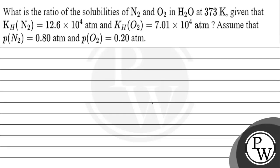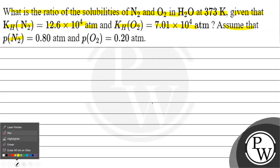Let's read this question. The question says: what is the ratio of solubilities of nitrogen and oxygen in water at 373 Kelvin, given that KH for N₂ is 12.6 × 10⁴ atm and KH for O₂ is 7.01 × 10⁴ atm? Assume that the partial pressure of nitrogen is 0.80 atm and the partial pressure of oxygen is 0.20 atm.